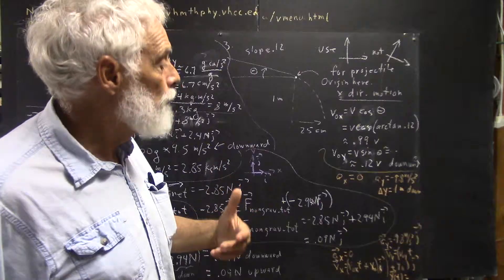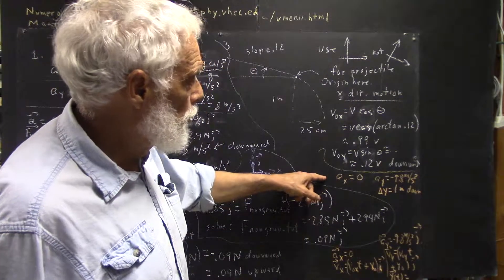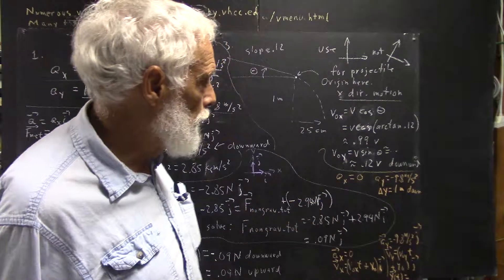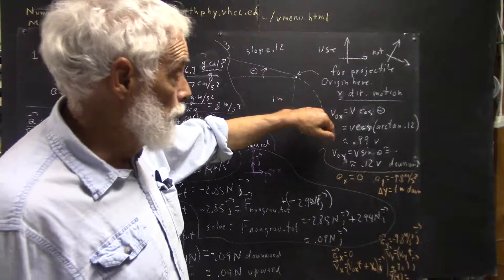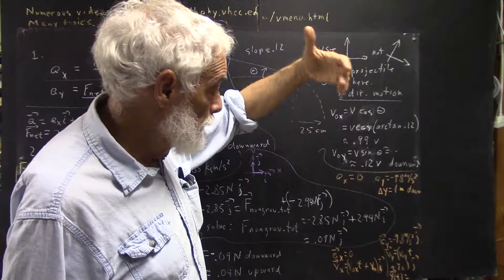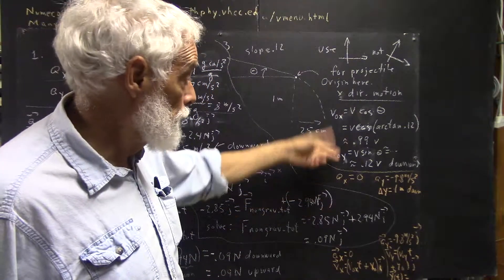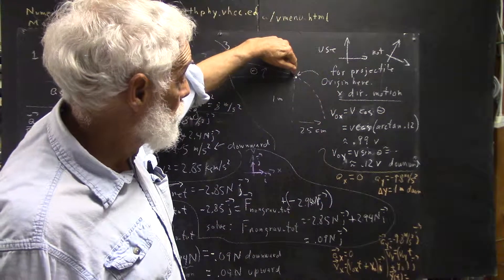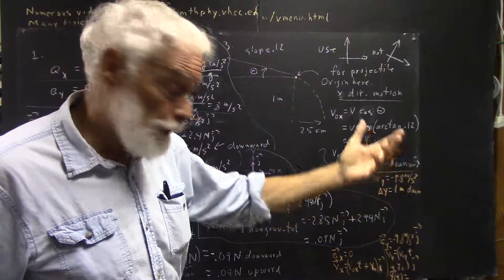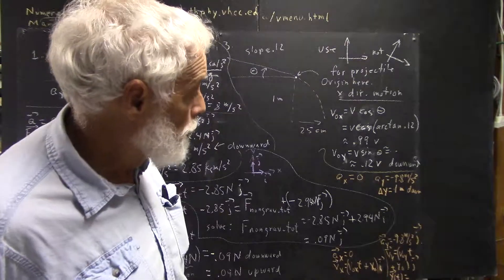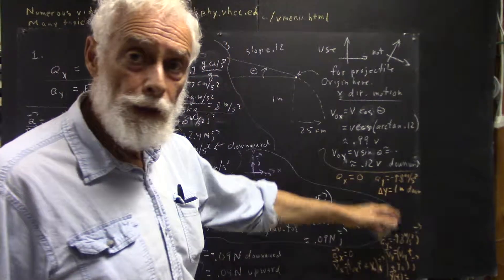The cosine of the arctangent of 0.12 is approximately 0.994 — I estimated it was around 0.994, just below 0.995. The sine is very close to the slope. If you understand the trigonometry involved with small angles, the tangent and the sine are very nearly the same, because the cosine is very close to 1.